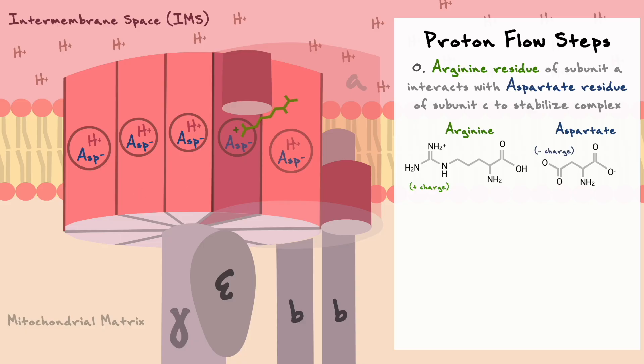In addition to this residue, you will notice that the A subunit also has two channels that conduct a path from the intermembrane space to the matrix.